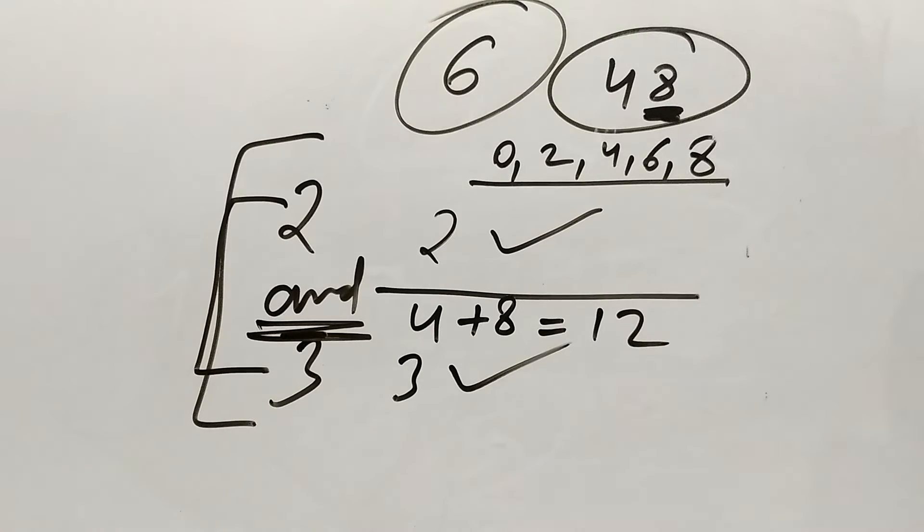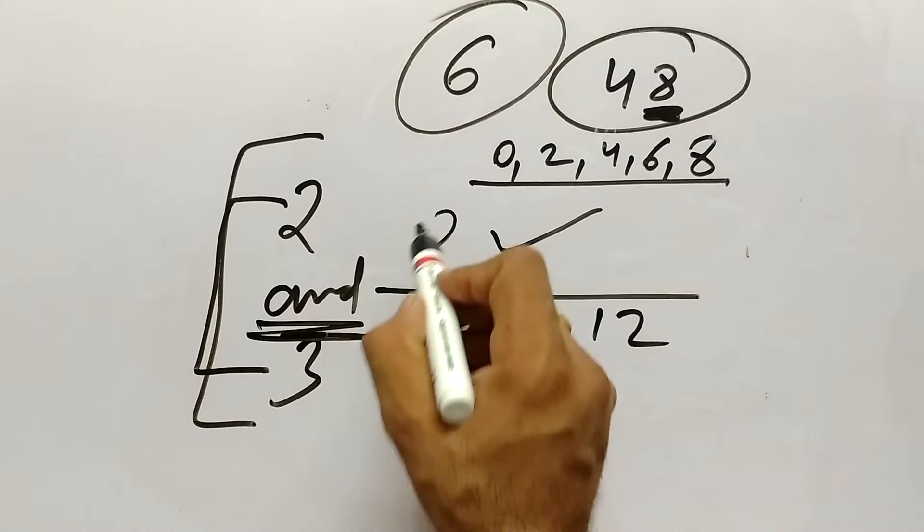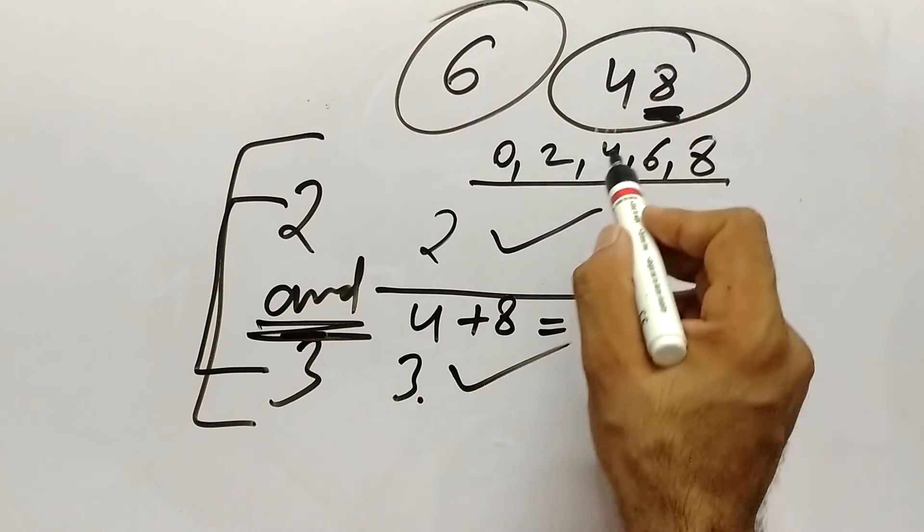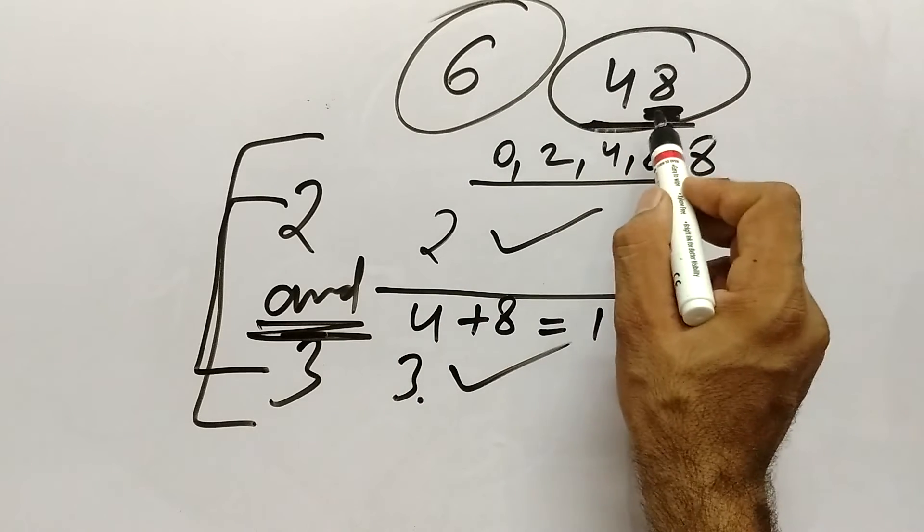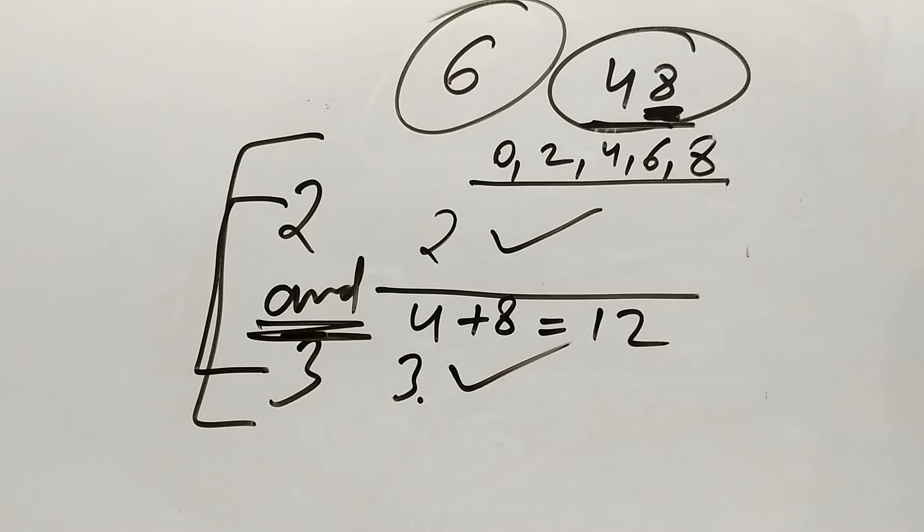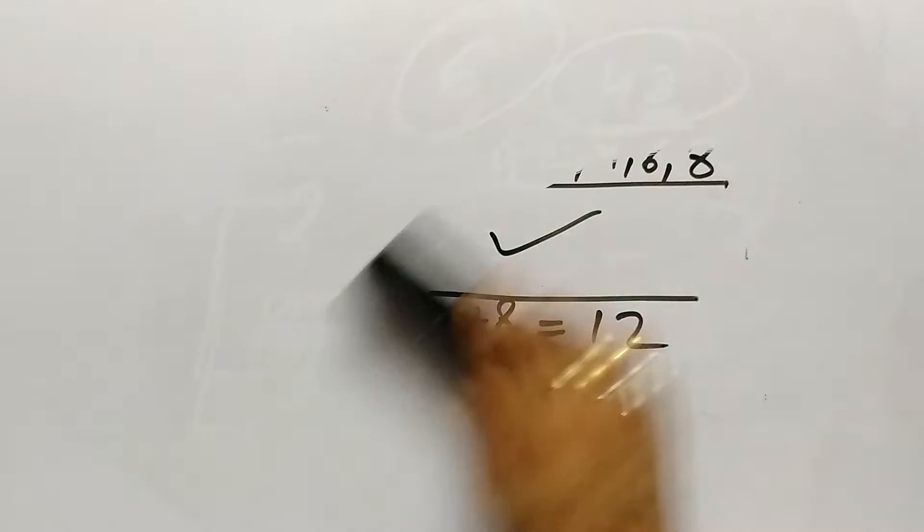So 12, 3 ki table mein aata hai, yes or no? So you will say yes. So 3 ka divisibility bhi clear hai. So agar dono ka divisibility clear tha, what we can say ki yes, 48 is exactly divisible by 6. Samaj aa gaya? Okay, let's do one more example.